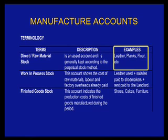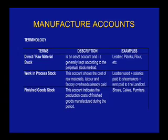In our specific example, the leather, the planks, and the flour are things directly involved in the manufacturing of a particular product. Taking it to our paper chain example, the paper would be our direct raw materials — that's what goes into the direct raw material stock account.